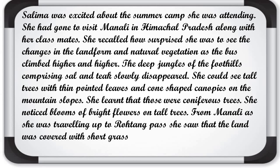She noticed blooms of bright flowers on tall trees travelling from Manali up to Rohtang Pass, and the land was covered with short grass and snow in some places. After reading this paragraph we can see that in different areas, different vegetation is found. Normal height trees like neem, shesham are found in plain areas; cone-shaped trees with pointed leaves are found on hilly areas; and thorny trees are found in desert areas.